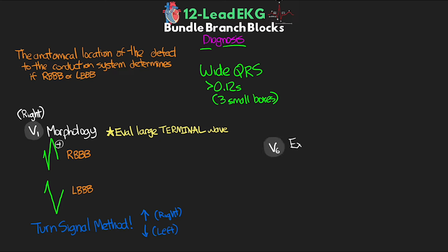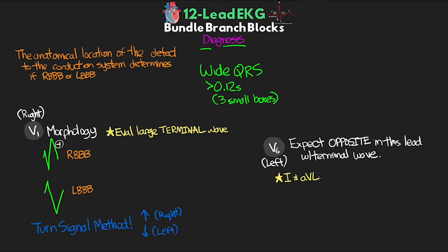From there, we should expect to see the opposite terminal wave in V6, since this lead is on the other side of the heart. Also keep in mind that our lateral leads — leads 1 and AVL — have a very similar direction to V6 and will present with similar morphologies. There are certainly further characteristics used to properly evaluate and diagnose bundle branch blocks, but this goes deeper into 12-leads than is necessary for this basic interpretation series.